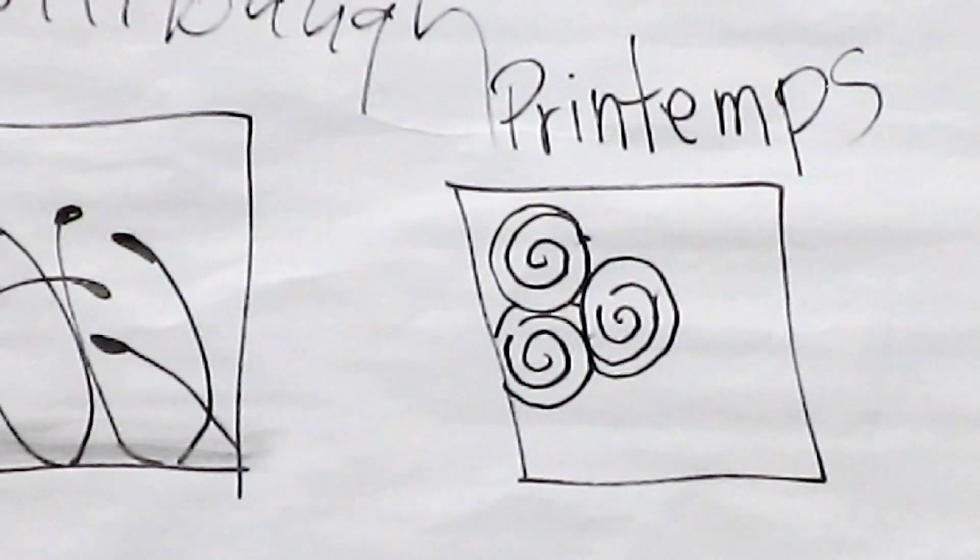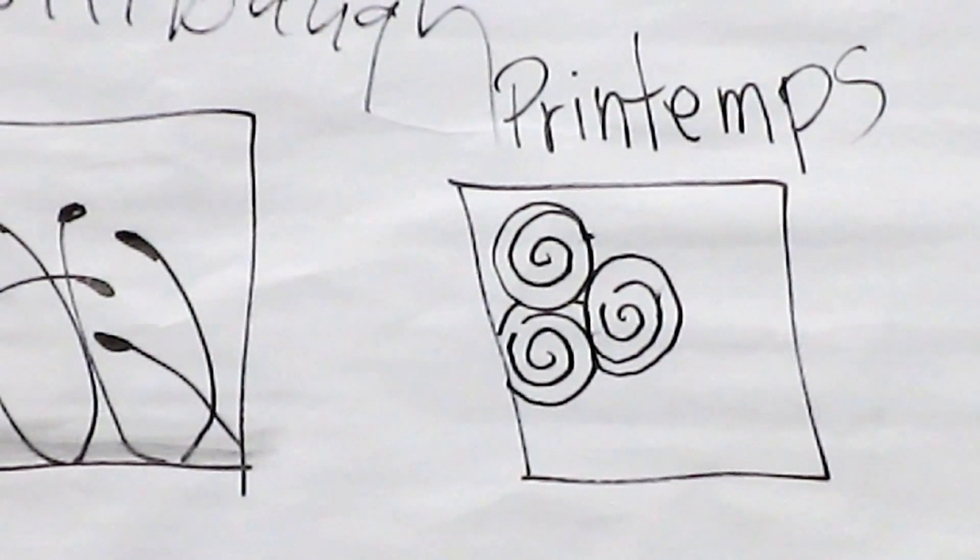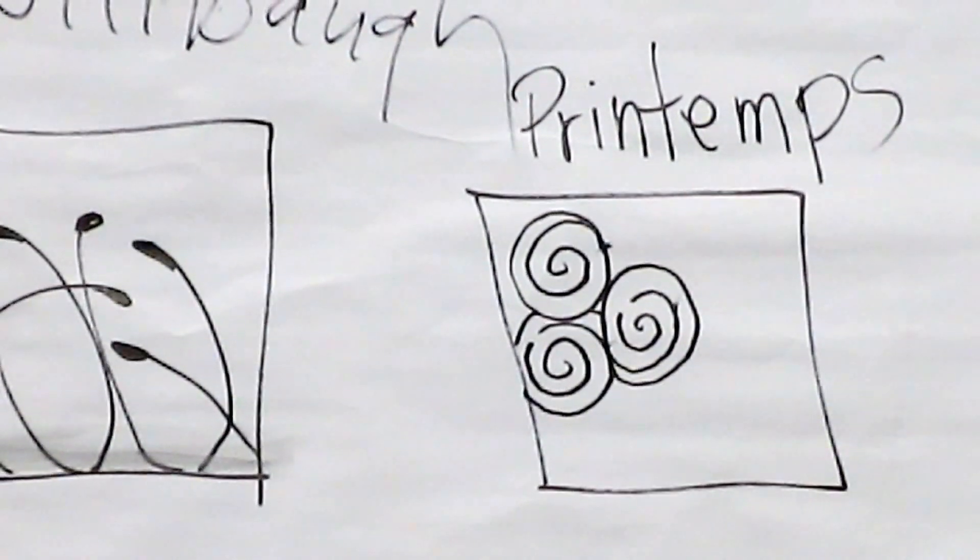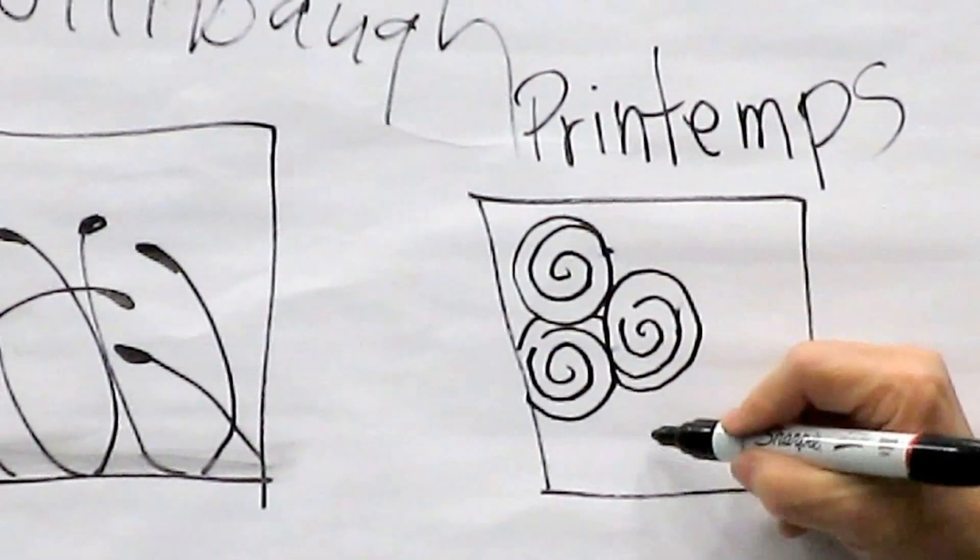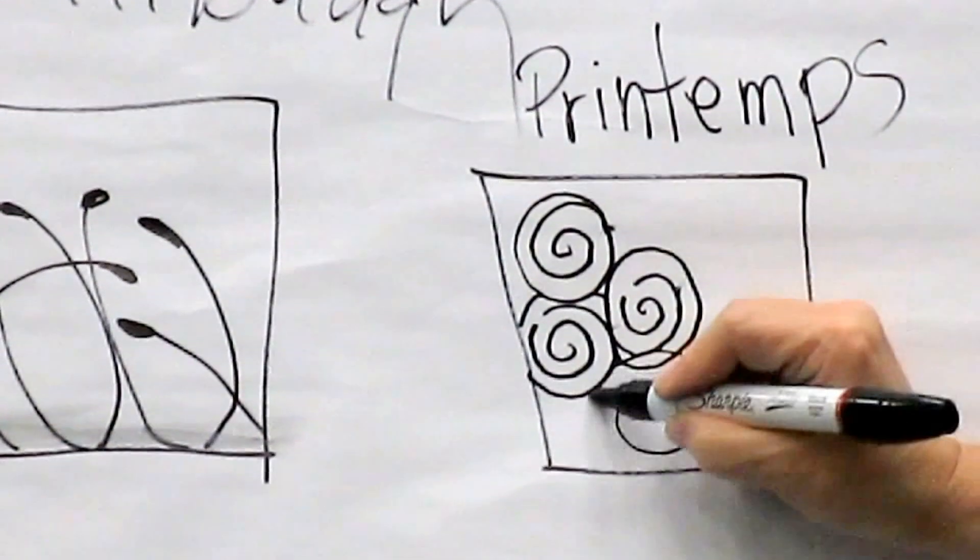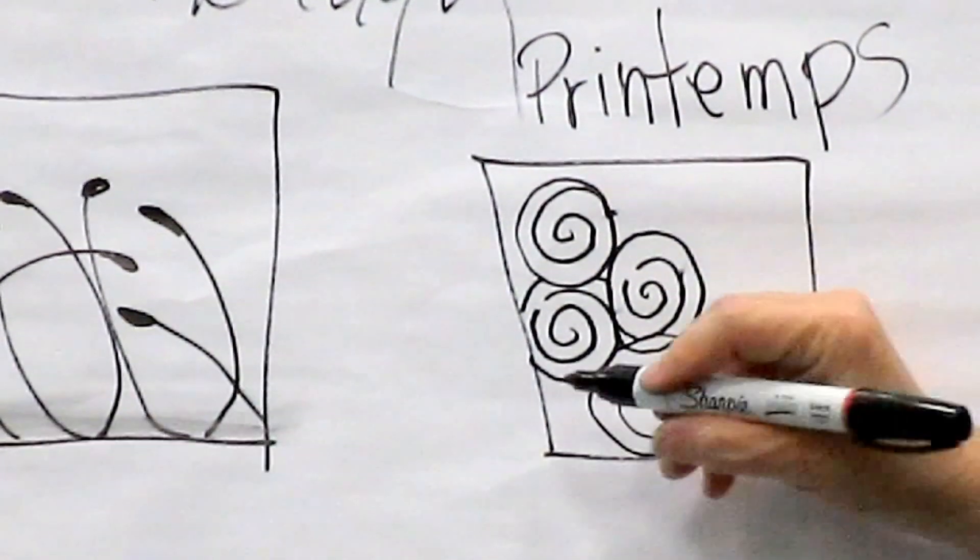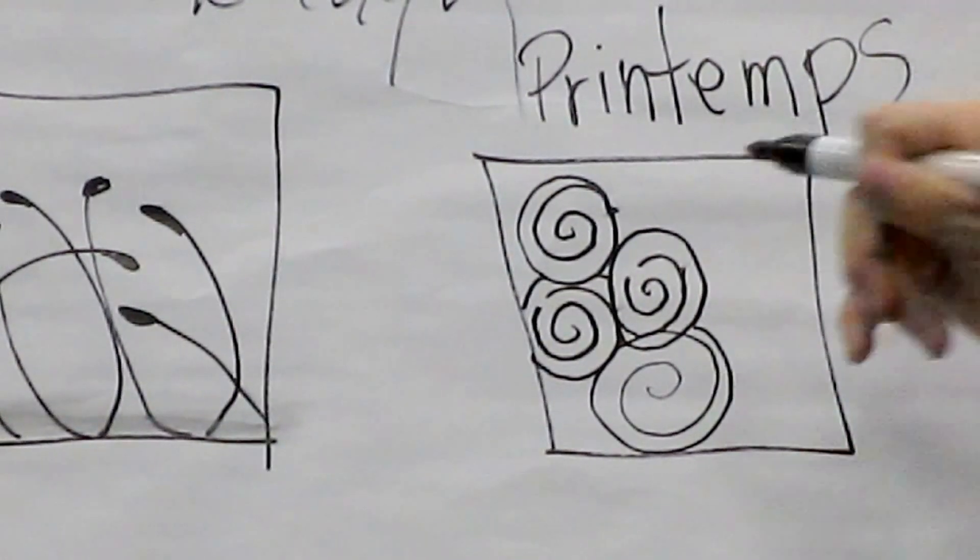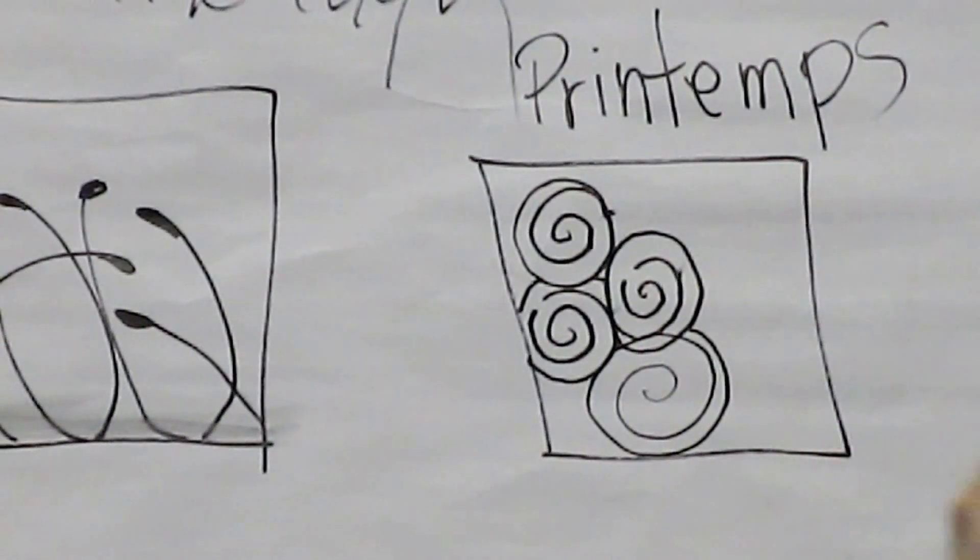Because highlights do kind of follow the light, and they will show up continuously in the same area. So this is print temps. And they don't all have to have a highlight, but if they do, put it in the same area.